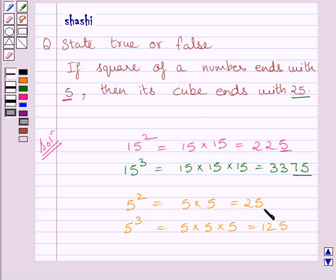Now clearly you can see, square of 5 ends with 5 and cube of 5 ends with 25. So we can say this statement is true for 5, but the same statement is false for 15. Since this statement is not true for every number, it is false.